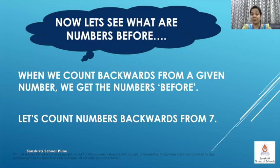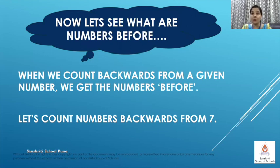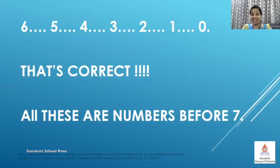When we count backwards from a given number, we get the numbers before. Now we have to count numbers backwards from 7. So let's start counting with me: 6, 5, 4, 3, 2, 1 and 0. Awesome, that's correct — all these are numbers before 7.